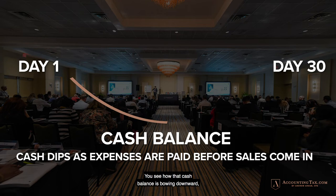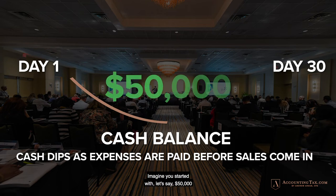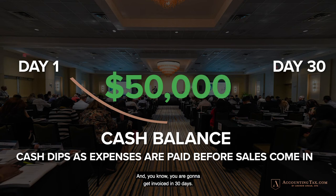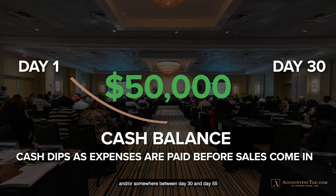You see how that cash balance is bowing downward. Imagine you started with $50,000 in your account, and you are going to get invoiced in 30 days, but you have expenses you have to pay right now. Then your cash sales come in on day 30, or somewhere between day 30 and day 55, because sometimes people don't pay immediately.